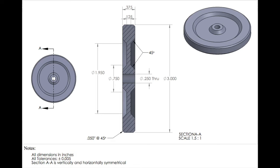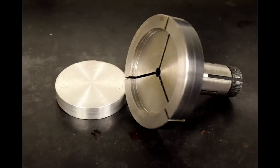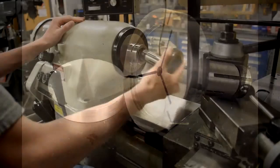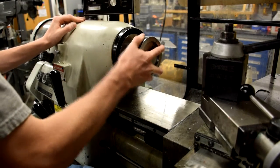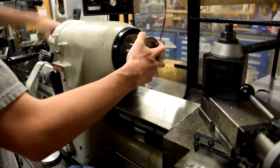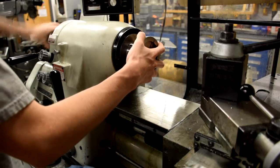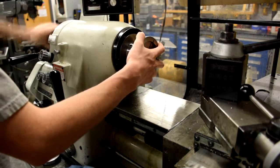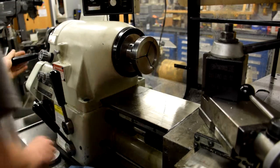To start, get some stock that is 3 inches in diameter and greater than 3 eighths of an inch thick. Install a 3 inch collet into the lathe. Place your stock in the collet.